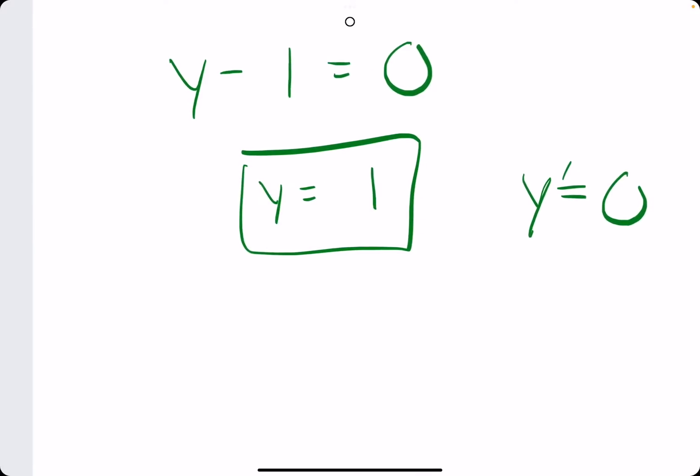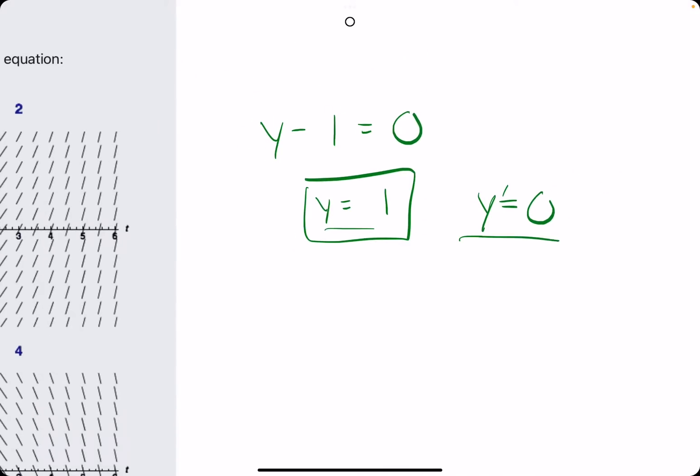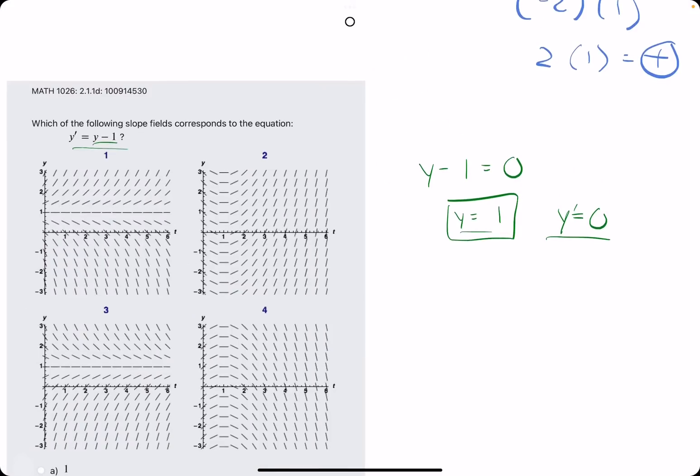What does this mean? At y = 1, the slopes in our slope field should all be 0.